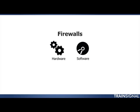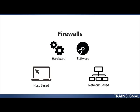A firewall can either be a hardware device — an actual physical firewall box that you go out and buy — or it can be software built into the operating system or software that you install on your computer. Firewalls can also be host-based, meaning they're protecting the flow of data in and out of an individual host or computer, or they can be network-based, meaning you are controlling the flow of data in and out of your entire network.